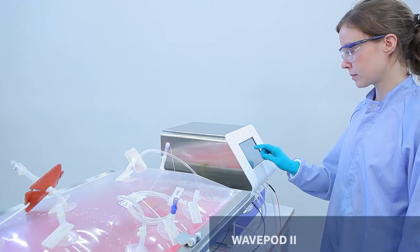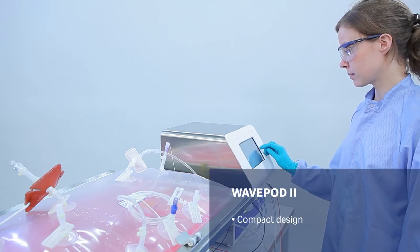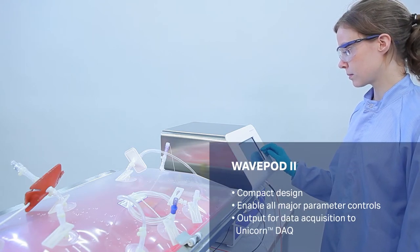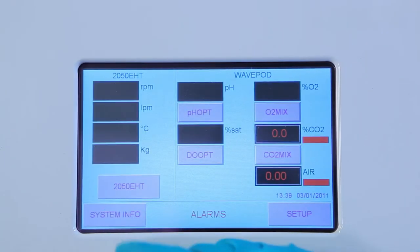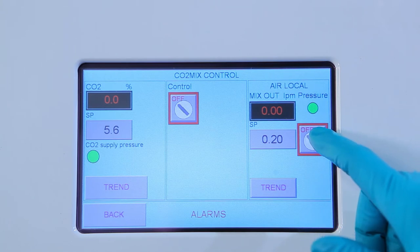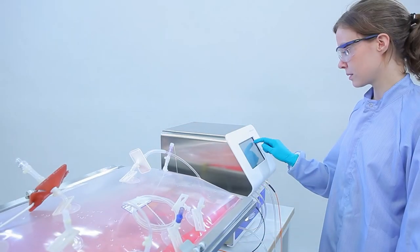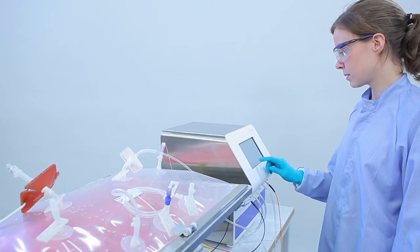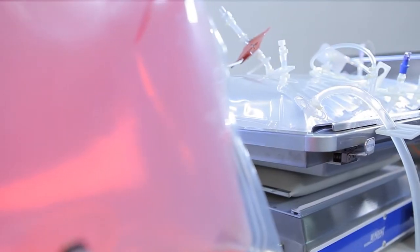The WavePod 2 integrated controller handles setup, control, and monitoring of cell culture parameters. The color touch screen provides easy access to all operations, data, and alarm conditions from the connected control modules. Start rocking, set angle and air parameters, and start the control of temperature and pH.